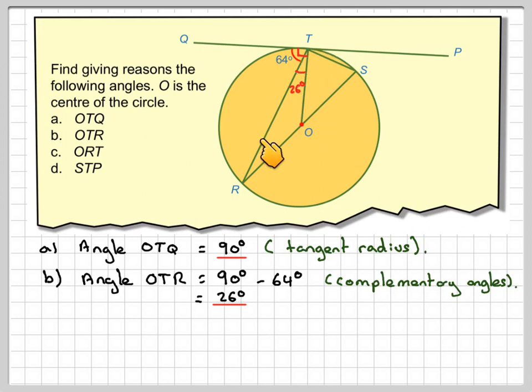Now we would notice here, because this is the centre of the circle, this is also the radius. So therefore this line is the same length as this line. So this triangle here is isosceles. Triangle ROT is isosceles. So this angle is also equal to 26.